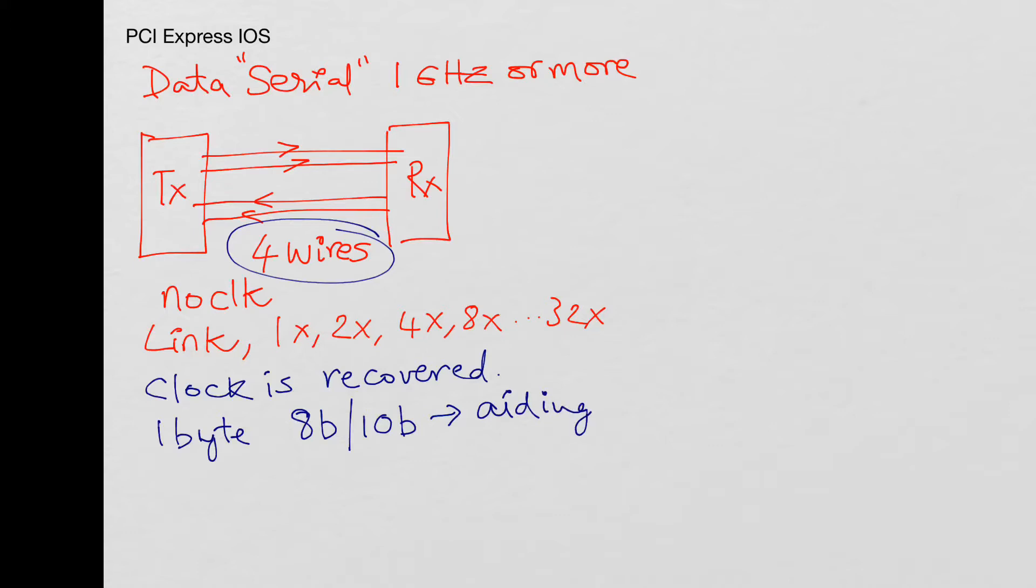For example, if you have all zeros or all ones, you'll have a tough time recovering the clock. So for aiding the clock recovery, the data is basically encrypted and sent. There is an 8 bit 10 bit protocol that is sent over there.